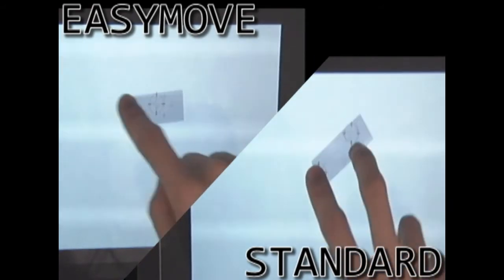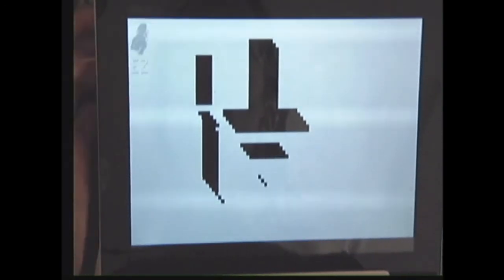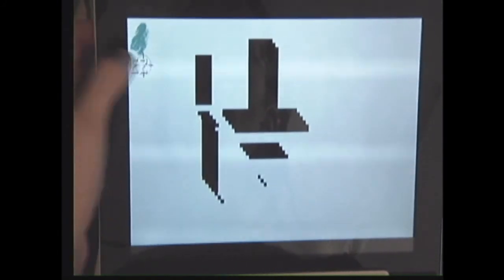You have two ways to manipulate objects, Easy Move and Standard. You can toggle between Easy Move and Standard by swiping downwards over the smudge and releasing over the Easy button.